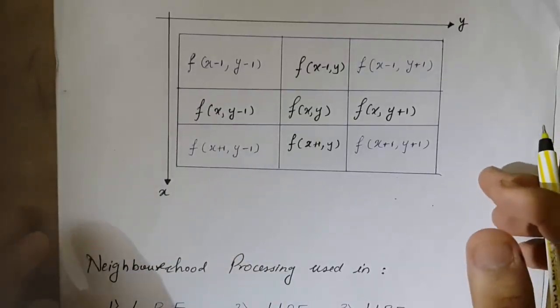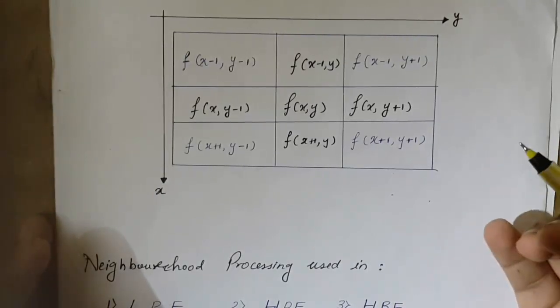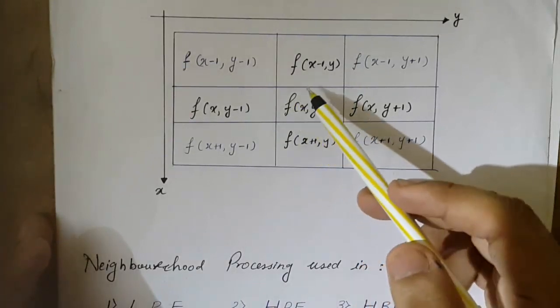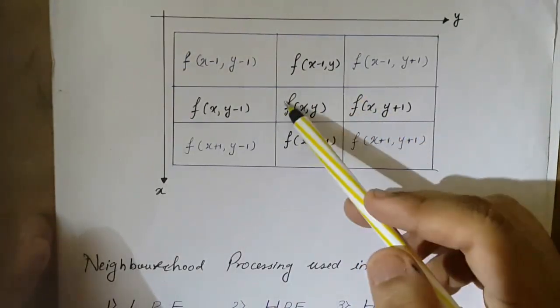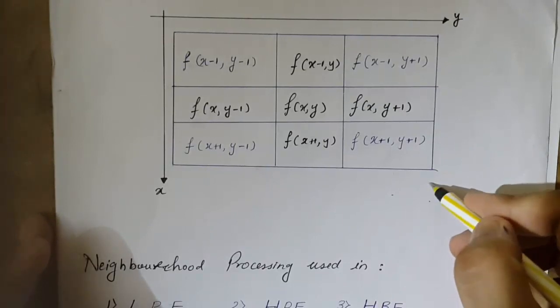Hello guys, today we are going to learn about neighborhood processing. This is another part of image enhancement techniques. In neighborhood processing, we consider the neighborhood of the pixel of interest. Here I have drawn the spatial domain representation of an image.